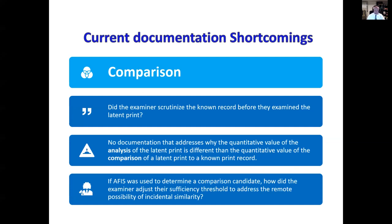We don't often see documentation that addresses why the quantitative value changes between the analysis phase and the comparison phase — not all features are present in both images. And in recent times, if AFIS was used to determine a comparator, did the examiner adjust their sufficiency threshold to address the possibility that AFIS might have found incidental similarity between two different records? This is what AFIS does — it finds close matches. Would those close matches be indistinguishable to a human examiner? That depends on how much information is in the print.